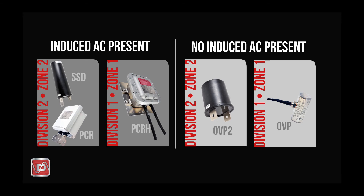Locations that tend to be Div 1 or Zone 1 could include refineries, airport fueling systems, gas processing plants, or other locations where explosive gases are vented. Using this chart, you can easily select a product family based on these two criteria. An AC mitigation project, for example, typically uses a Div 2 or Zone 2 product, resulting in a choice between the PCR and the SSD. Both of these products can be used by default for most applications if it's a Div 2 or Zone 2 site. For applications that do not involve induced AC, such as insulated joints within airports or plants, the OVP or OVP2 can be used.